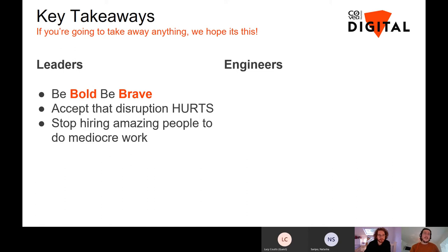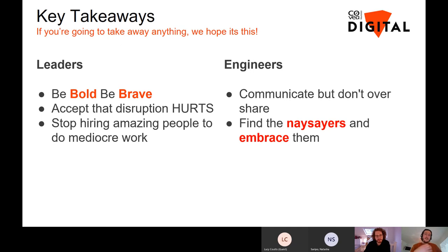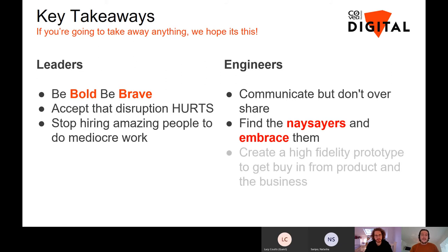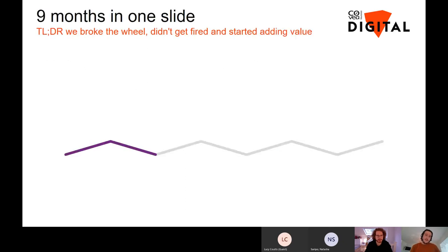Key takeaways for engineers and everybody else: communicate your activity but don't overshare — make people aware of what you're doing so it doesn't become a silent secret function, but don't give away too many secrets or everybody will want a piece of it. Find the naysayers — the people who will challenge you — and embrace them. In an established enterprise engineering function there'll be lots of different opinions and experiences; some of those people can expedite the activity you're trying to achieve. Also, create high-fidelity prototypes — it takes a bit more time but really helps get buy-in from product and the business.